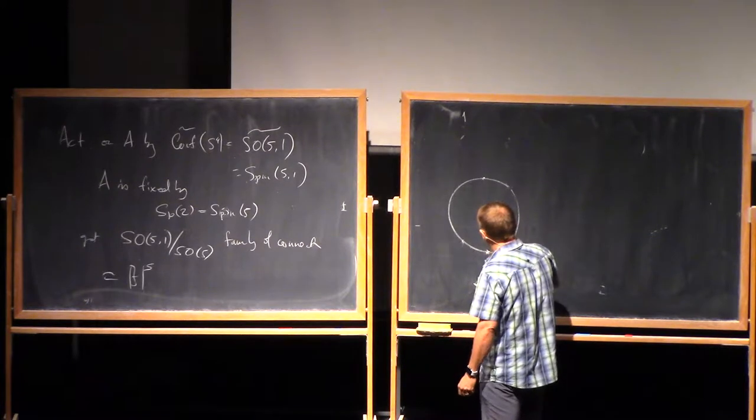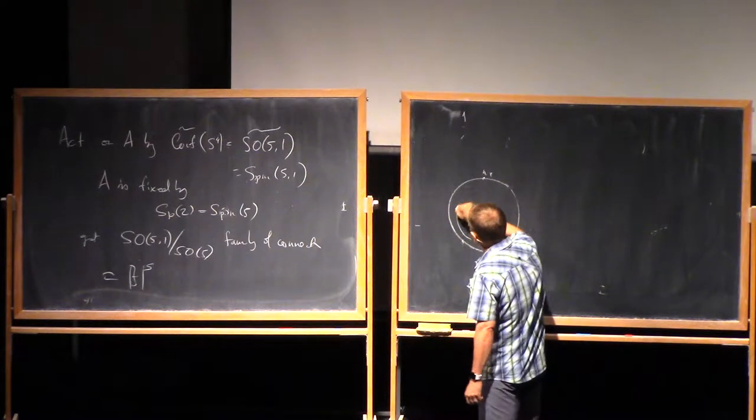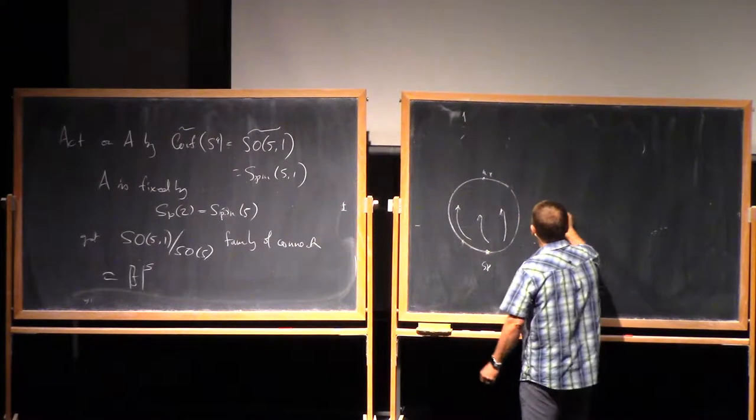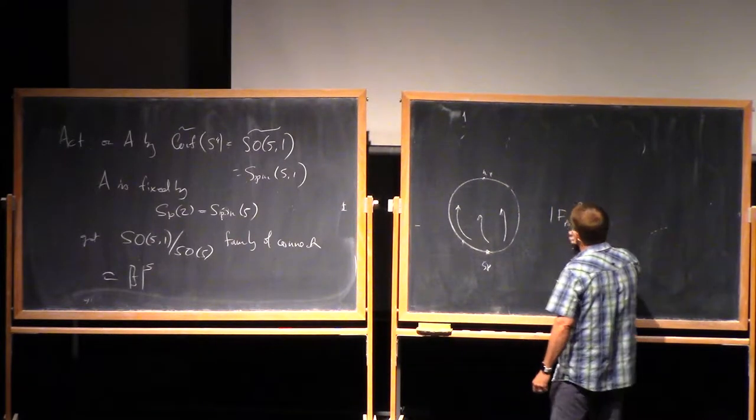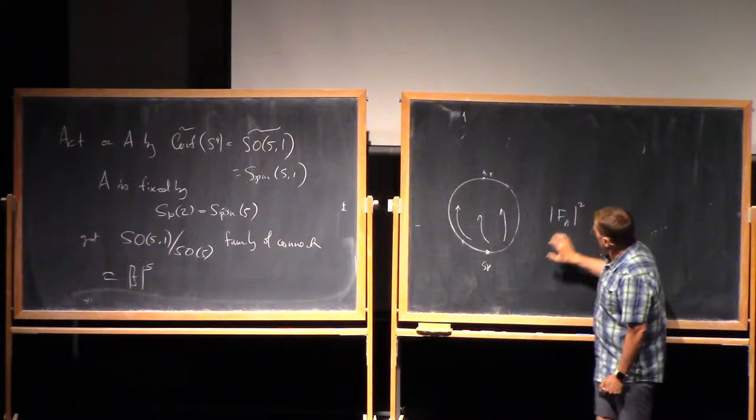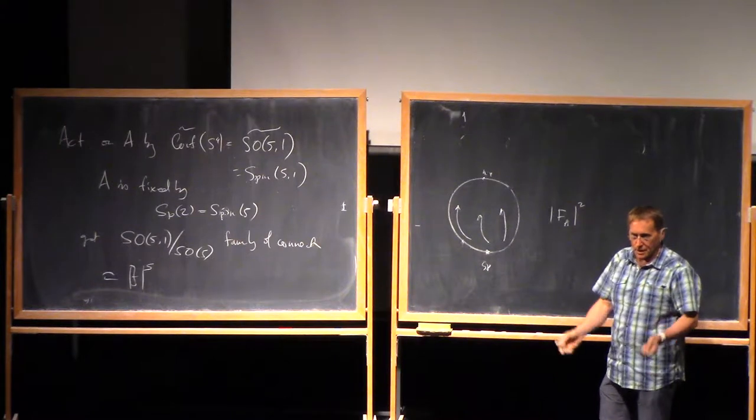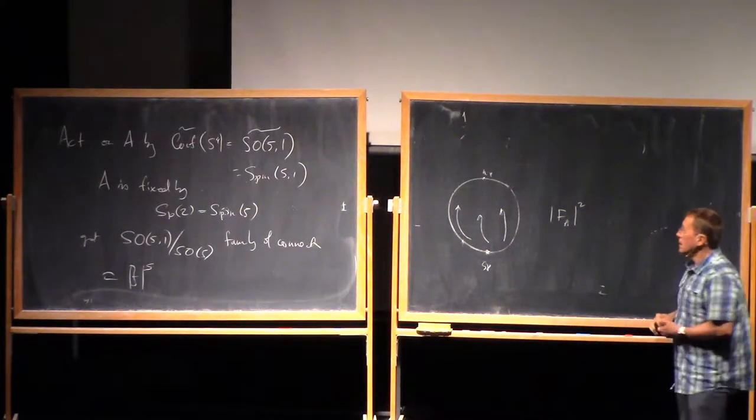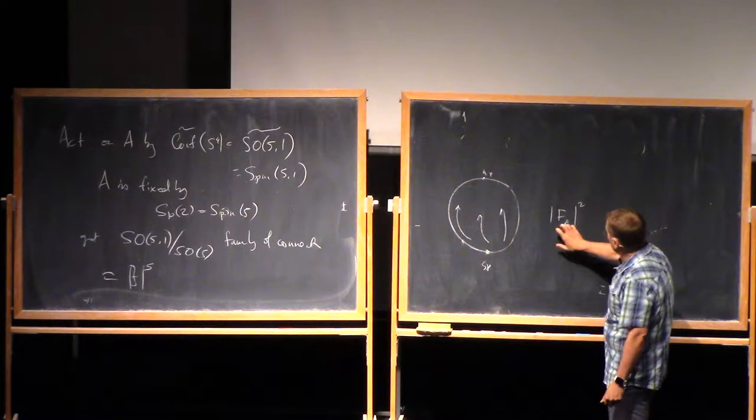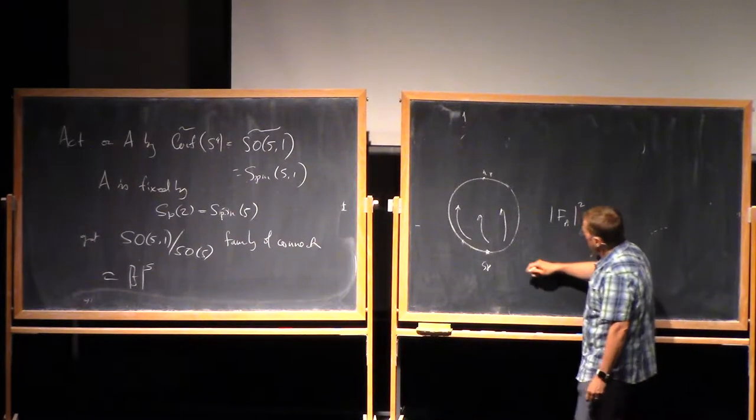So if I scale, maybe I've thrown out the south pole, scale towards the north pole. Then if I think about the point-wise norm of the curvature of this connection, for the original connection, it's just uniformly distributed. The connection was invariant under isometries of, in its full isometry group, its point-wise norm is invariant in the isometry group of S4. It's uniform distribution.